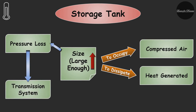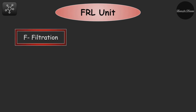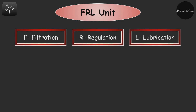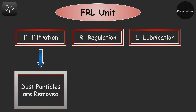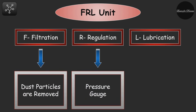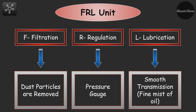Now let's see what is the FRL unit. F stands for filtration, R stands for regulation, and L stands for lubrication. The atmospheric air is contaminated, so it is filtered to remove dust particles to avoid their entry into the actuator or the transmission system. A regulator is used to regulate the pressure of the air, and the required pressure can be set through a pressure gauge. Lubrication is used so that the compressed air flows smoothly through the transmission system, where a fine mist of oil is created and mixed with the compressed air.